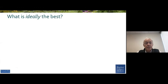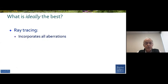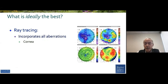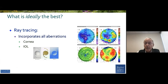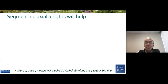What's ideally best? Tom's approach is really the best because ray tracing incorporates all of our aberrations — the aberrations of the cornea, if there are significant ones, the aberrations of the IOL, anterior and posterior curvatures. So theoretically, that ought to be the best we can do.